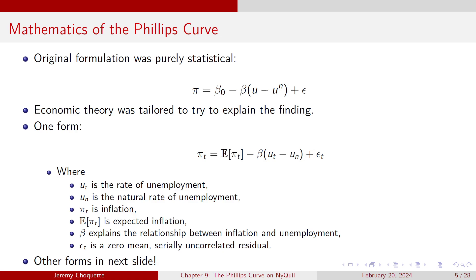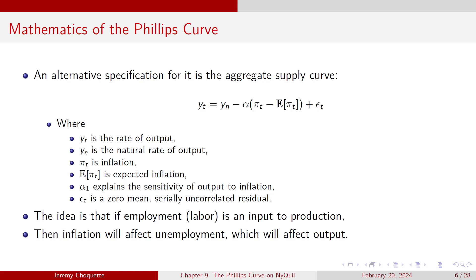An alternative specification thinks of it not in terms of unemployment and inflation, but output and inflation. Unemployment and output are two different sides of the same coin — labor is an input in the production function. If labor goes up, unemployment goes down; if unemployment goes down, output goes up, since output is a function of capital and labor, increasing in both.